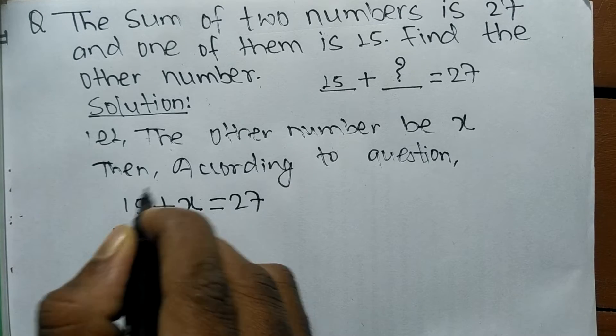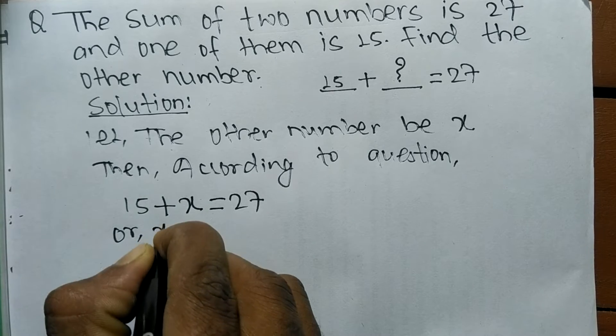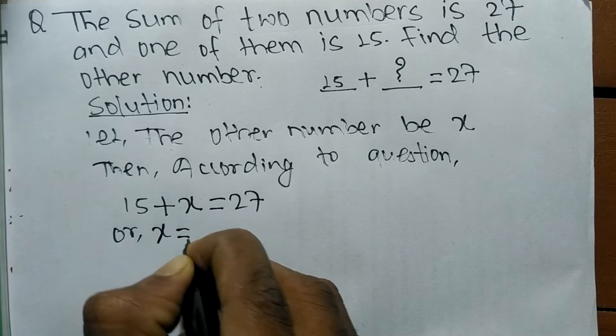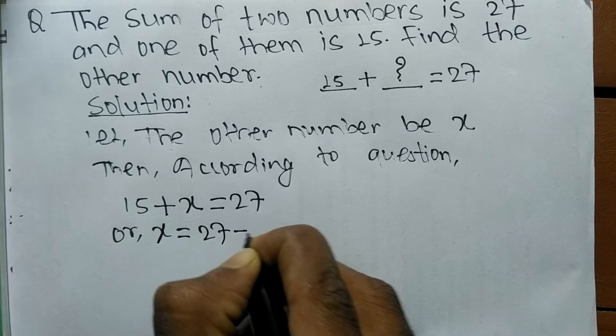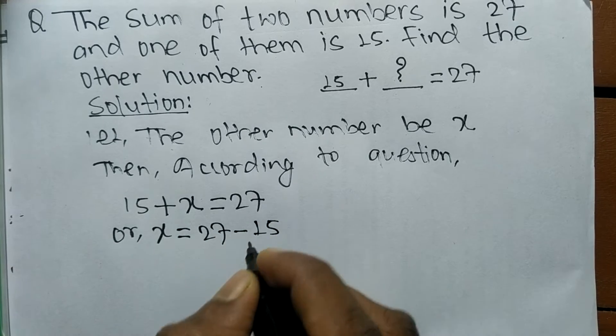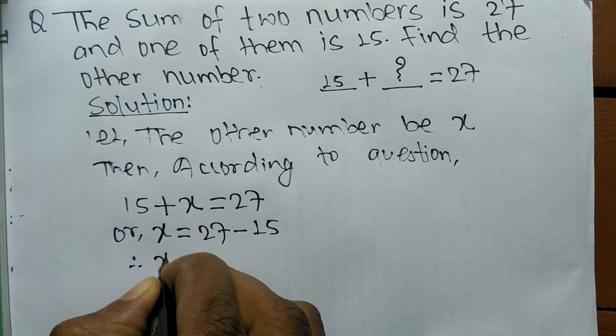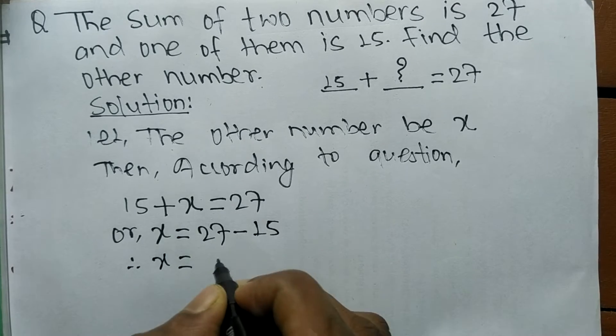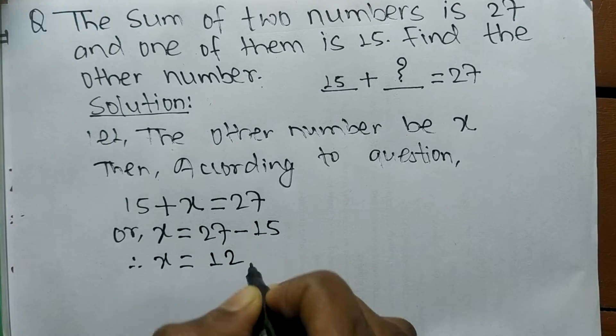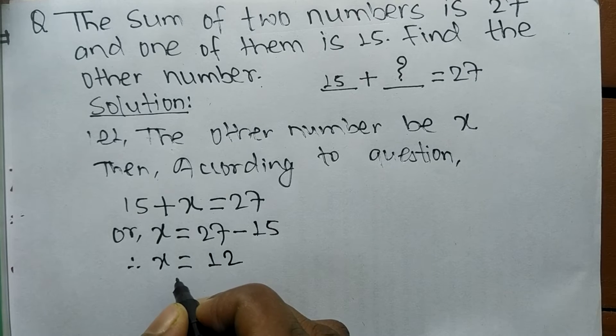Now, 15 is in plus sign, so when it moves to the opposite side it becomes minus. We can write: x = 27 - 15. So x = 27 - 15, which equals 12.